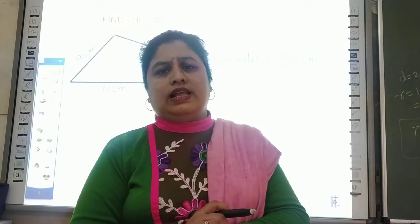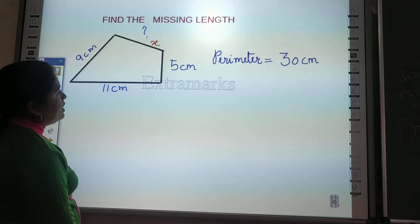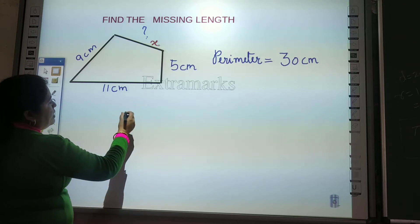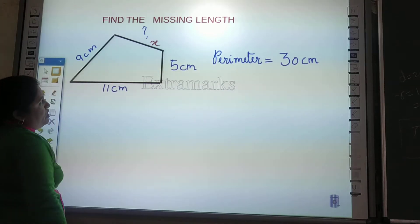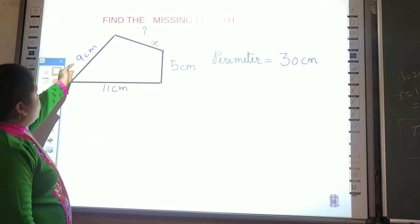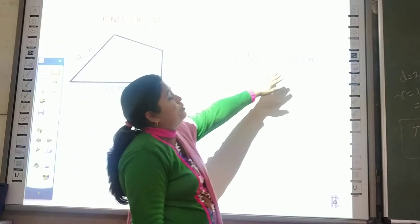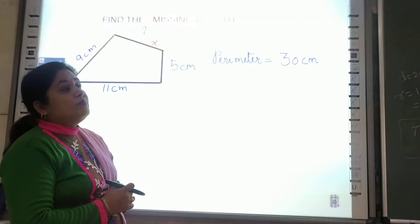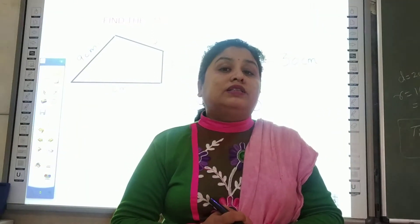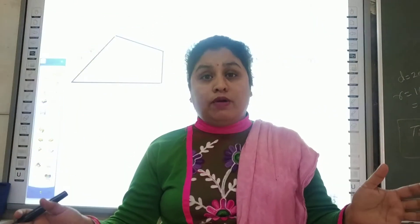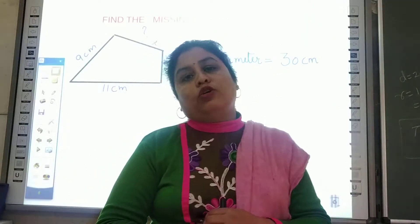There are 26 letters and you can use any one. I'm taking X. Now what do I have to do? Nothing new — we remember that the perimeter of any closed figure is the sum of all sides. So 9 + 11 + 5 + X should equal 30 cm. Now, as I mentioned when we studied addition and subtraction story problems: if you know the total amount and you have to find a missing part, the operation is subtraction.